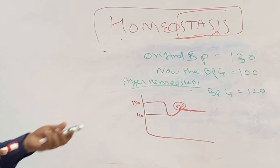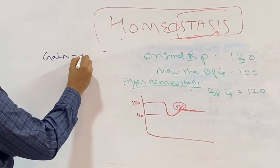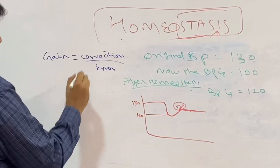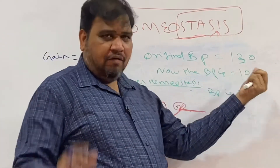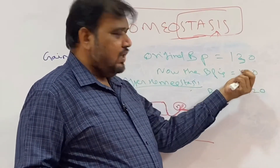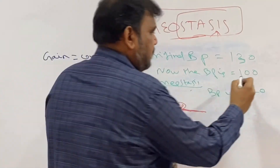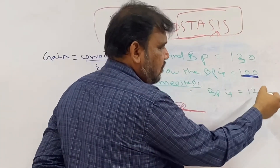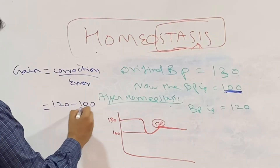Now I want to calculate the gain for this scenario. Gain is equal to correction divided by error. Correction is how much the value is getting corrected. The actual BP after the disturbance was 100. Before homeostasis, the BP was 130, but it came down to 100. After homeostasis, the BP went from 100 to 120. So the correction is 120 minus 100, which equals 20.